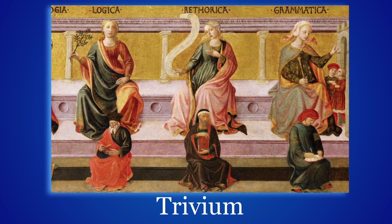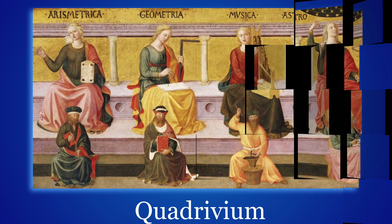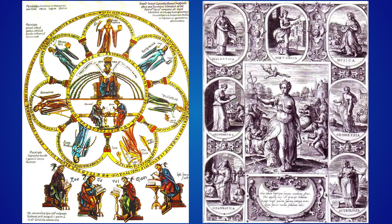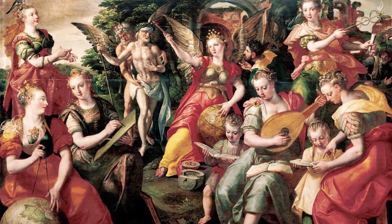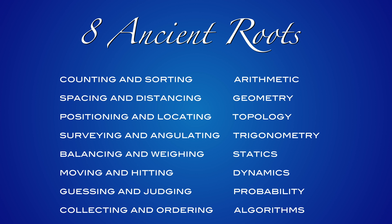Here is a picture of the three muses in the trivium and an illustration of the quadrivium. There are many places where these seven liberal arts and sciences are illustrated. Here is a picture of Martin de Vos from the 16th century, where you can see all seven liberal arts and sciences. There is also another approach, which is more narrowly tailored towards mathematics and its classification into mathematical fields.